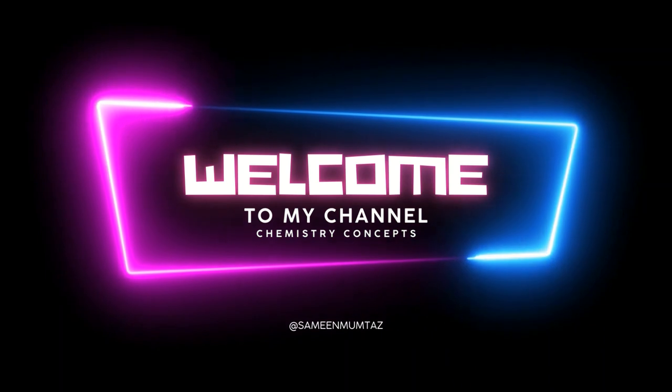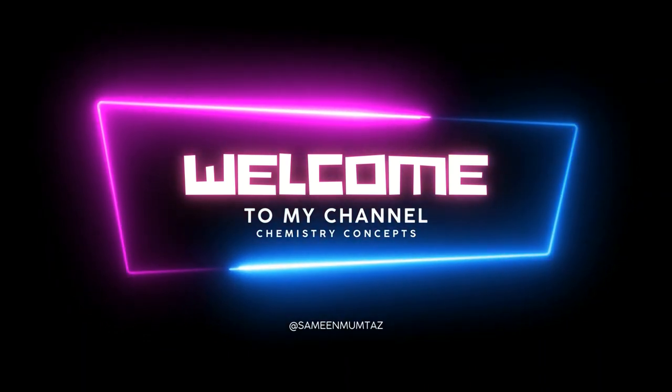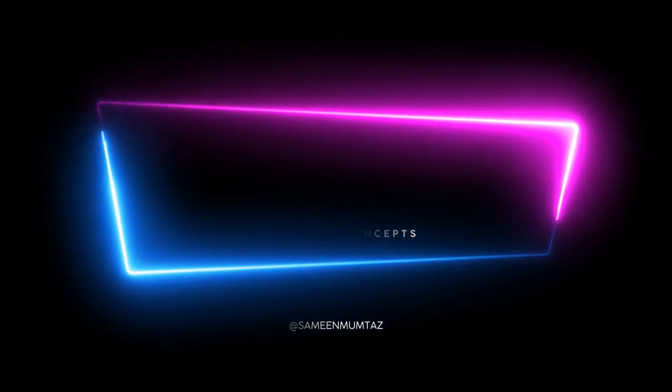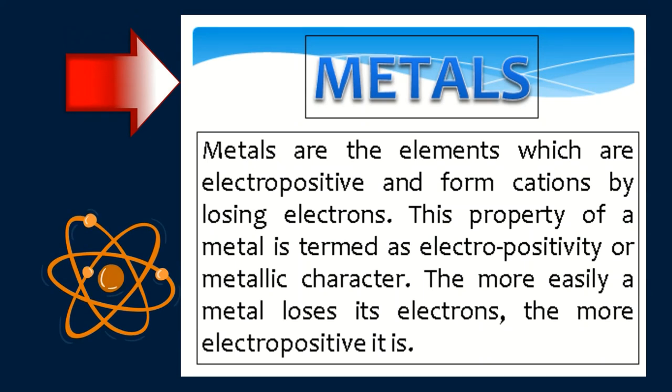Metals are the elements which are electropositive and form cations by losing electrons. This property of a metal is termed as electropositivity or metallic character. The more easily a metal loses its electrons, the more electropositive it is.